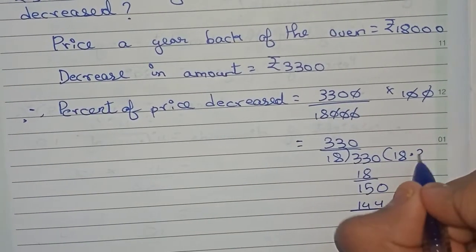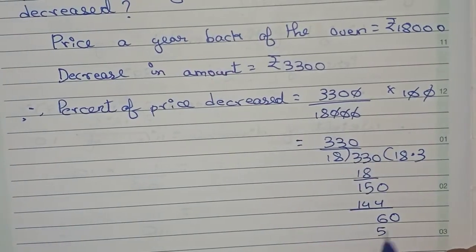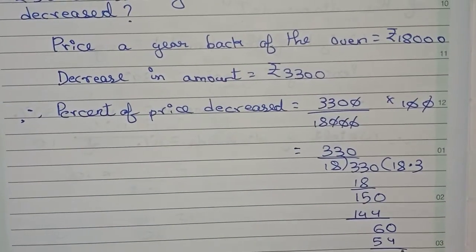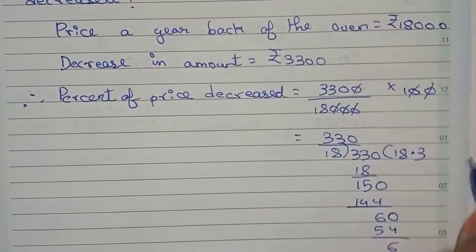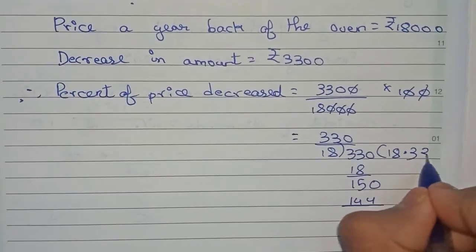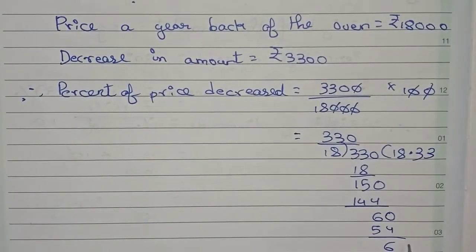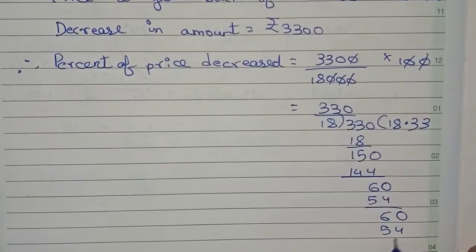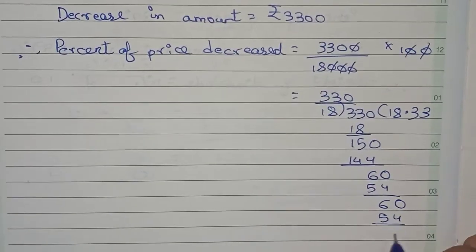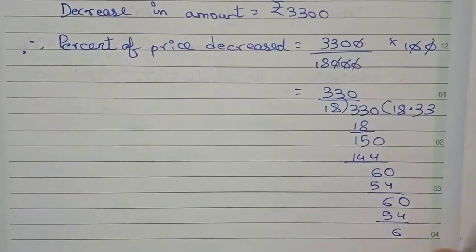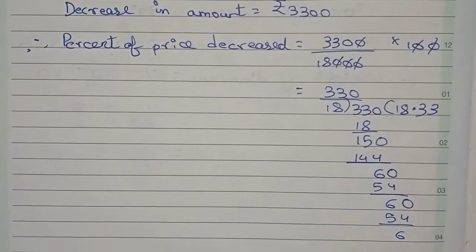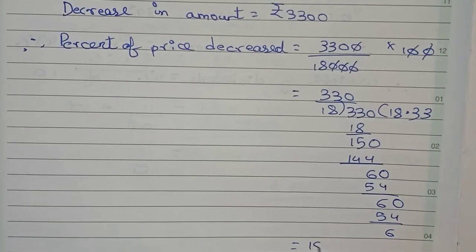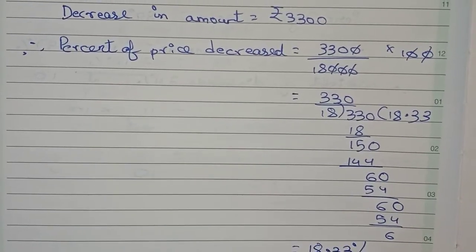Now 18 into 60 gives 54, remainder 6. Again bring down 0 — 18 into 60 gives 54 again. If we continue it will keep repeating, so we stop here. The answer is approximately 18.33 percent.